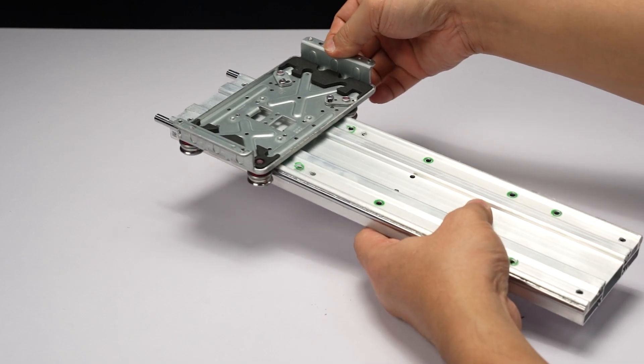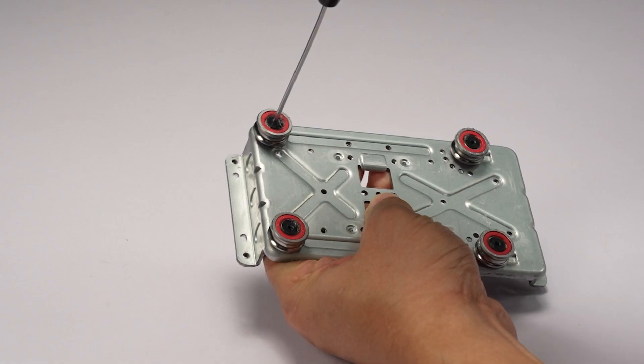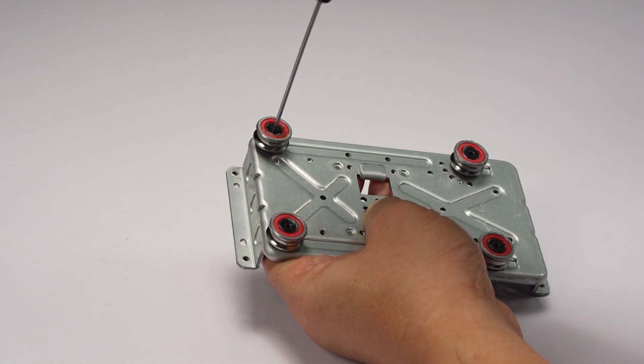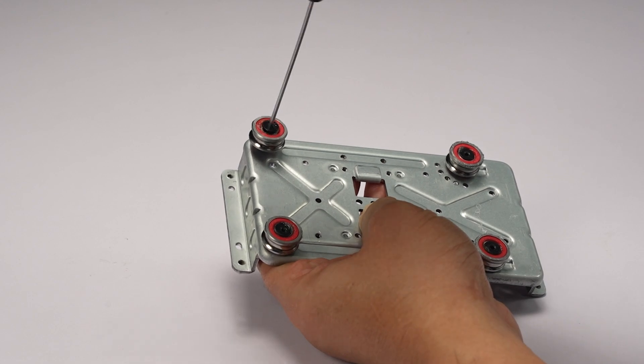Remove the heat bed bracket from one end of the Y axis linear rail. Remove one screw in the Y axis track bearing. The method of removing the four Y axis track bearings is the same.